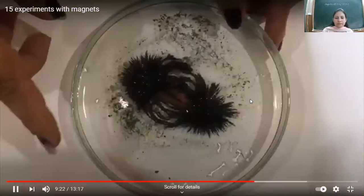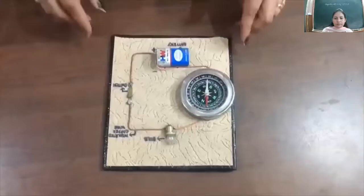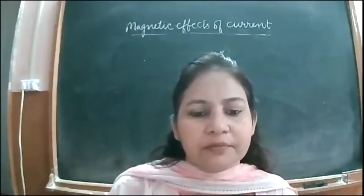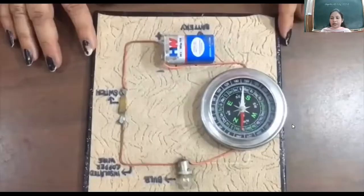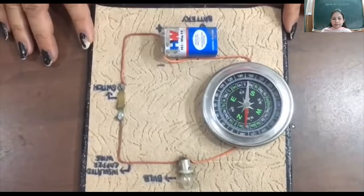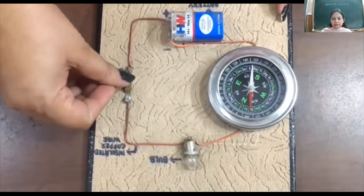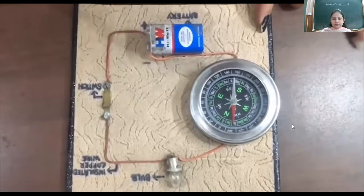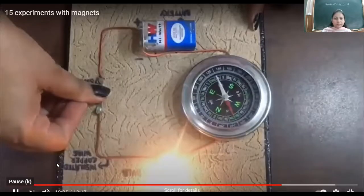Another beautiful pattern can be made by keeping two magnets under a glass plate with iron powder. Now let us discuss Oersted's experiment. I have a simple electrical circuit. Right now the compass needle is vertical. When I press the switch and current passes through the wire, it creates a magnetic field, due to which the compass needle gets deflected. You can see the deflection — it was vertical and now it is deflecting.